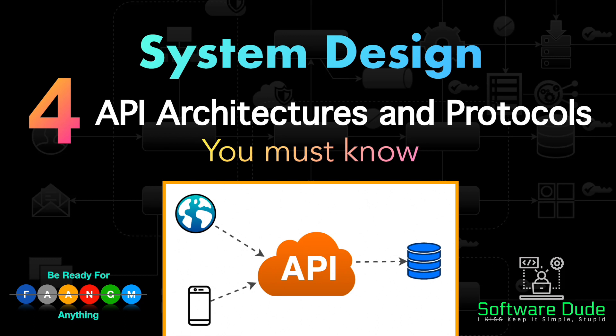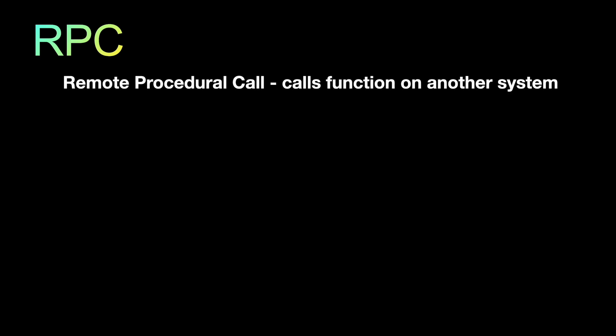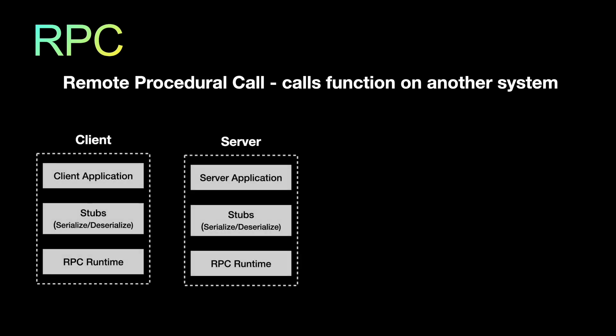The first API type is RPC — Remote Procedure Call — which is basically a way to call functions on another system. The communication starts when a client invokes a remote procedure, serializes the parameters and additional information into a message, and sends that message to a server. On receiving the message, the server deserializes the content, executes the operation, and sends back a response. The client and server stubs are the primary areas that serialize and deserialize the parameters.